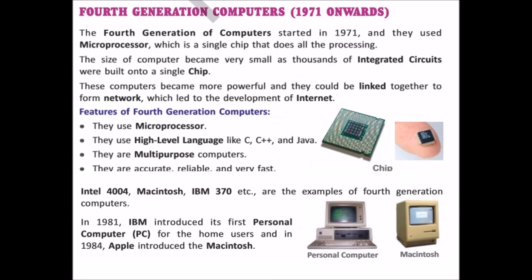After that, in 1971, fourth generation started and they used microprocessors in place of integrated circuits. Thousands of integrated circuits were built on a single chip. They were accurate, reliable, and very fast. High-level languages like C, C++, and Java were used in that generation. IBM 360 and Macintosh are examples of fourth generation. In 1981, the personal computer was introduced by IBM, and in 1984, Apple introduced the Macintosh.